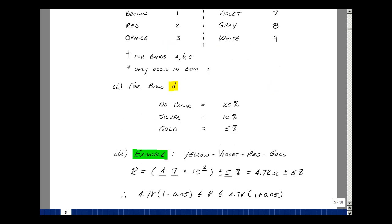And the last band refers to a thing called tolerance. If there's no color, it's indicating a 20% tolerance, silver 10%, and gold 5%.